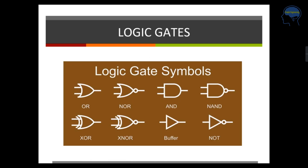These are the logic gate symbols. The first one represents OR gate. The second one is NOR gate, which is OR plus a NOT gate. Then AND gate, NAND gate, XOR gate, XNOR gate. This is the symbol for buffer and this is the symbol for a NOT gate.